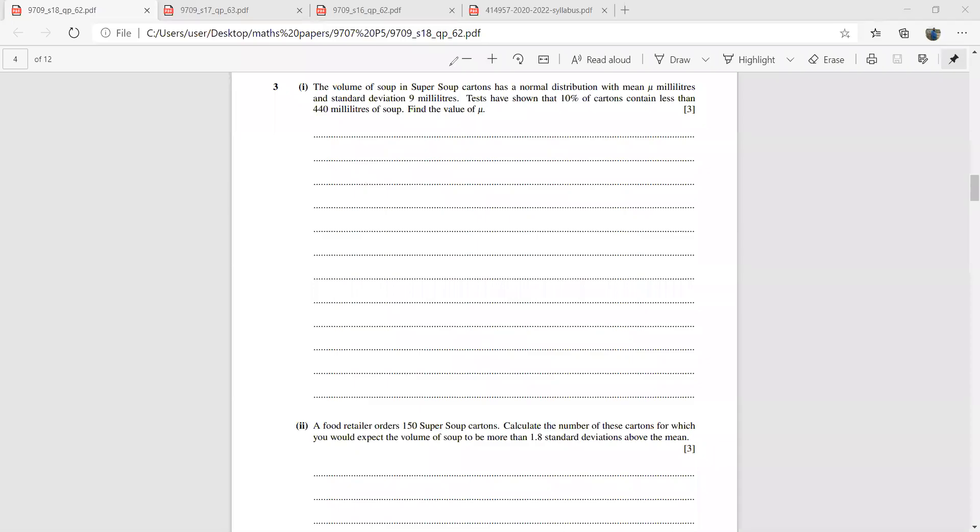We have a question from June 18. The volume of soup in super soup cartons has a normal distribution. You have to immediately get hold of this normal distribution thing here, with mean mu milliliters and standard deviation 9 milliliters. Tests have shown that